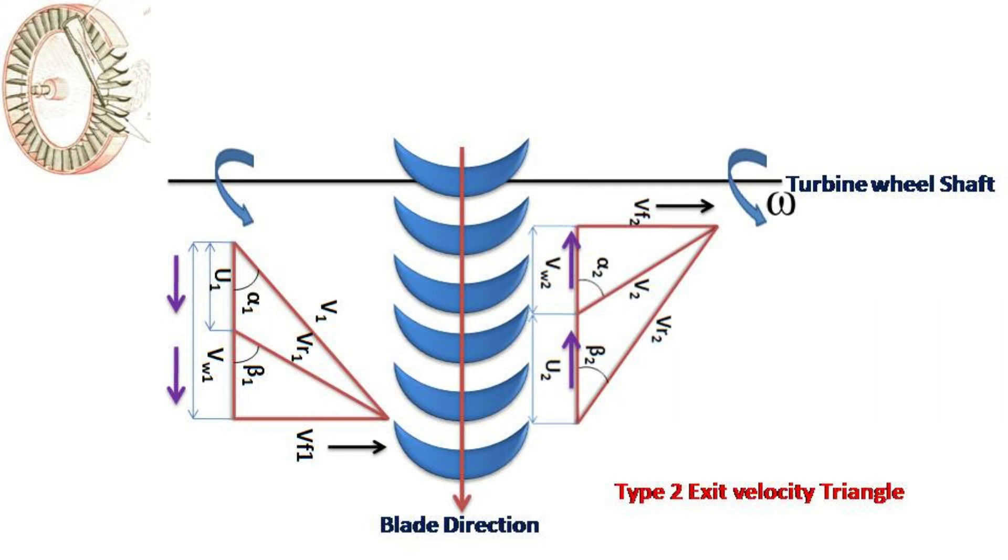This tangential force multiplied by the blade velocity u will give the power produced by the turbine.